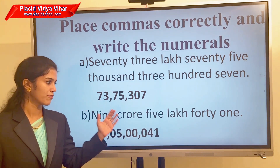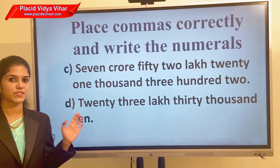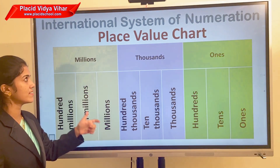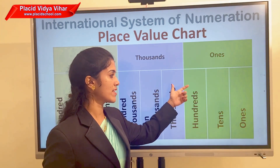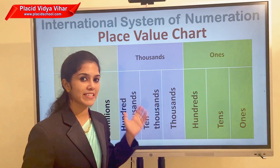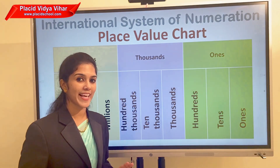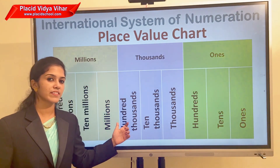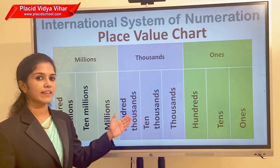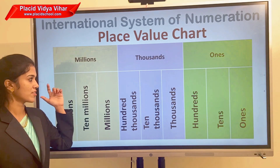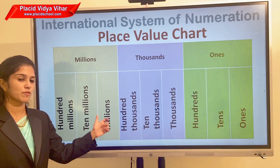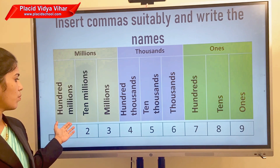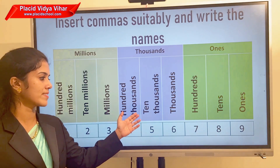Now, we use the international system worldwide. Here in the international place value chart, under the ones period we have ones, tens, and hundreds — same as Indian system. But in the international system we have three places in the thousands period: thousands, ten thousands, and hundred thousands. The next period is the millions period, which has millions, ten millions, and hundred millions place.